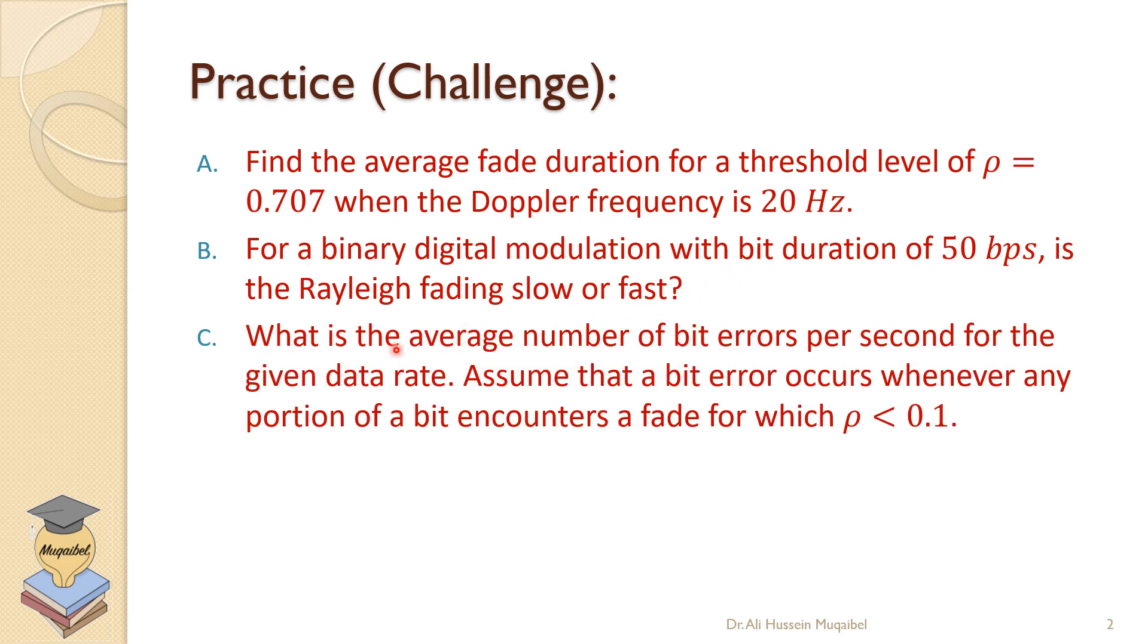Now the third question is, what is the average number of bit errors per second for the given data rate? Assume that a bit error occurs whenever any portion of a bit encounters a fade for which ρ is less than 0.1.